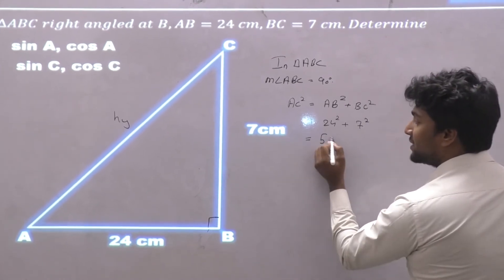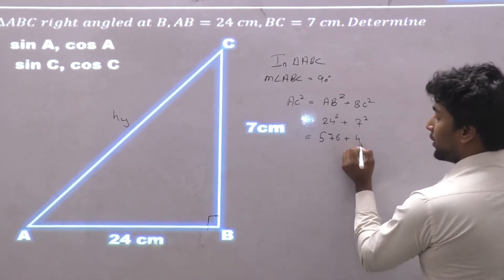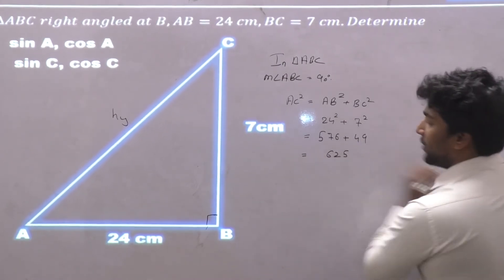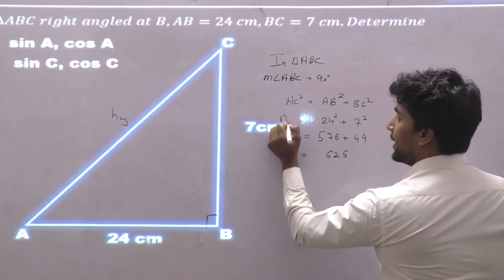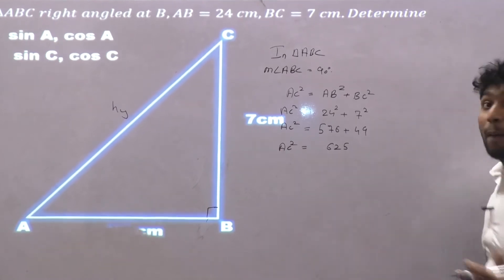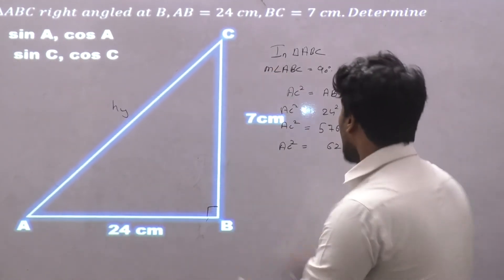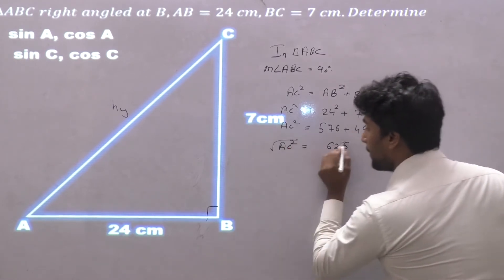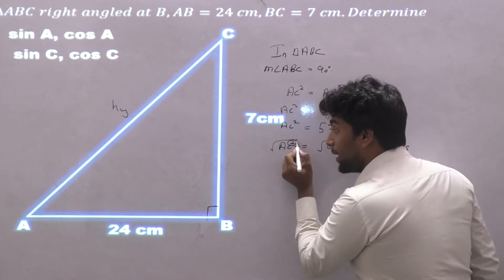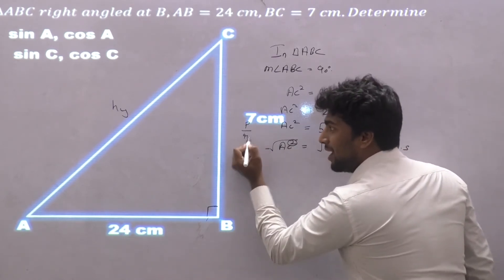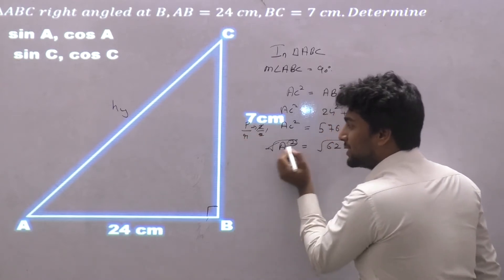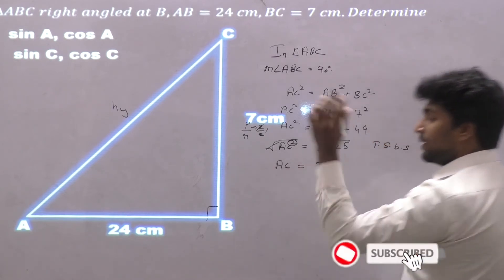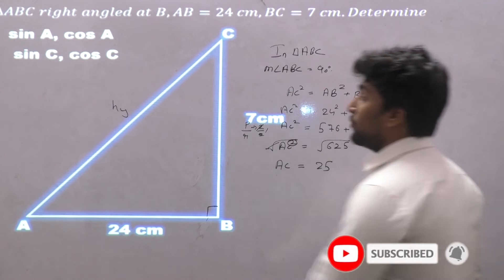24 squared is 576, plus 49, which gives us 625. So AC square is equal to 625. We need AC, not AC squared, so taking square root on both sides: AC is equal to the square root of 625, which is nothing but 25. So I got the value of AC as 25.